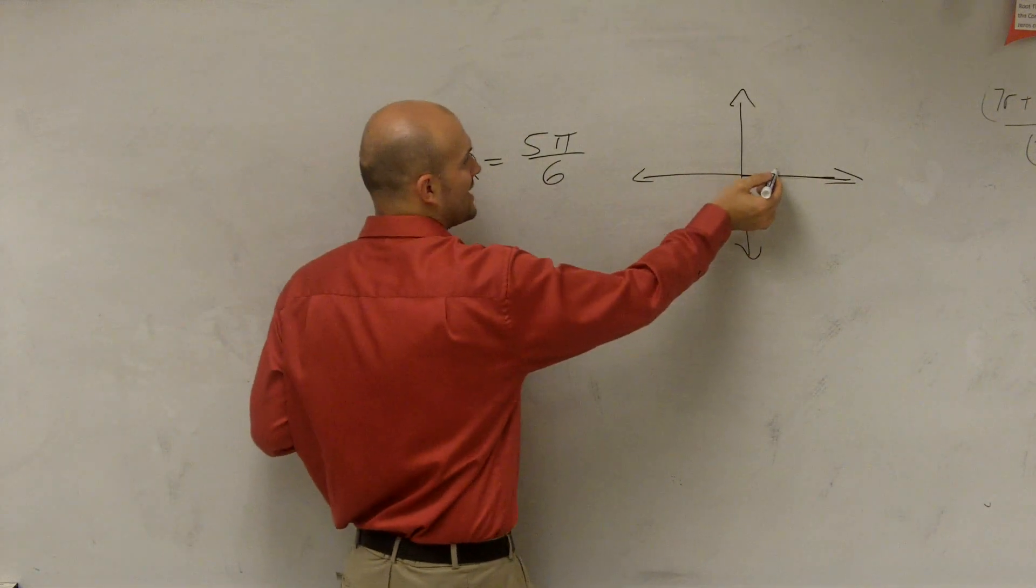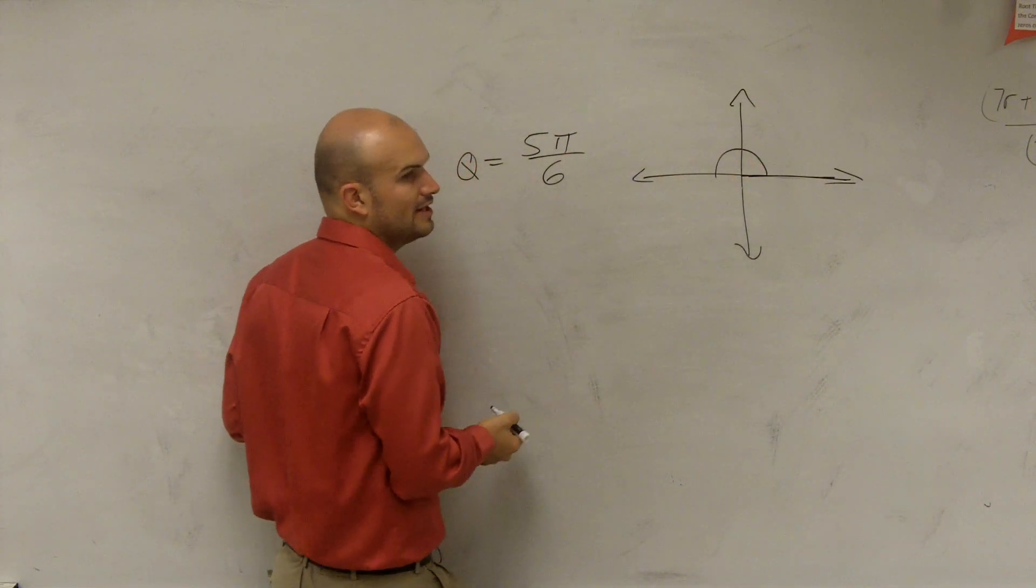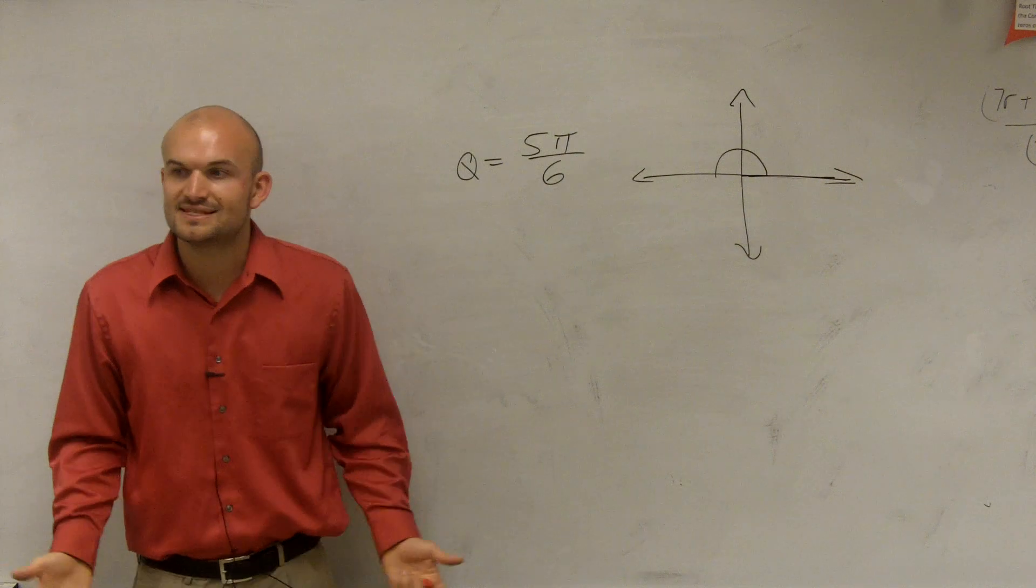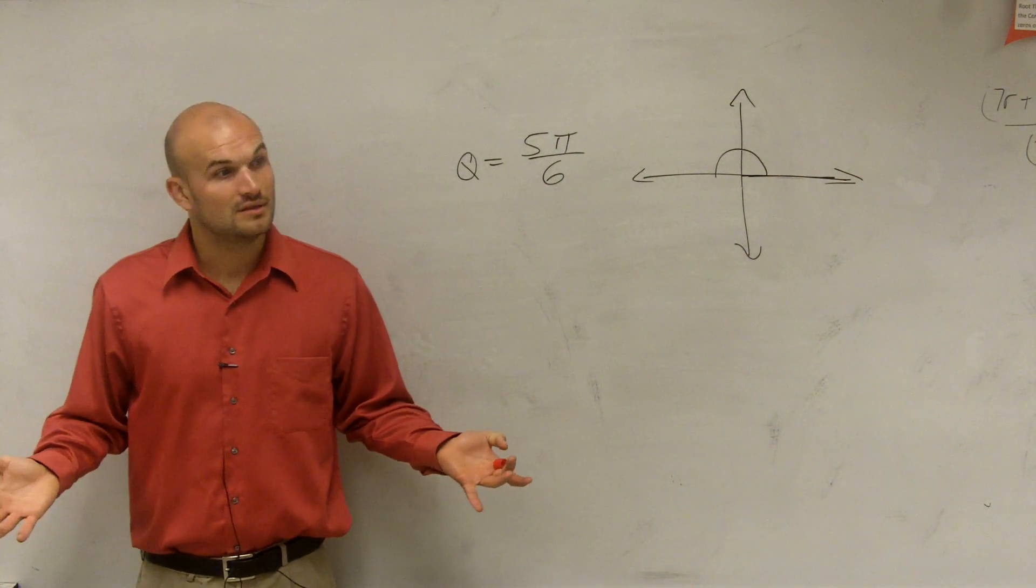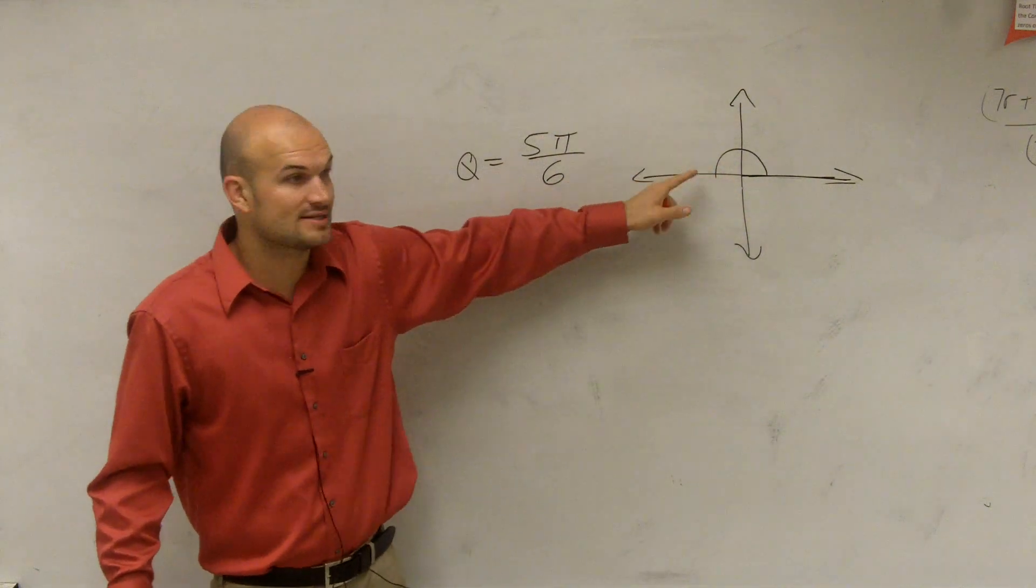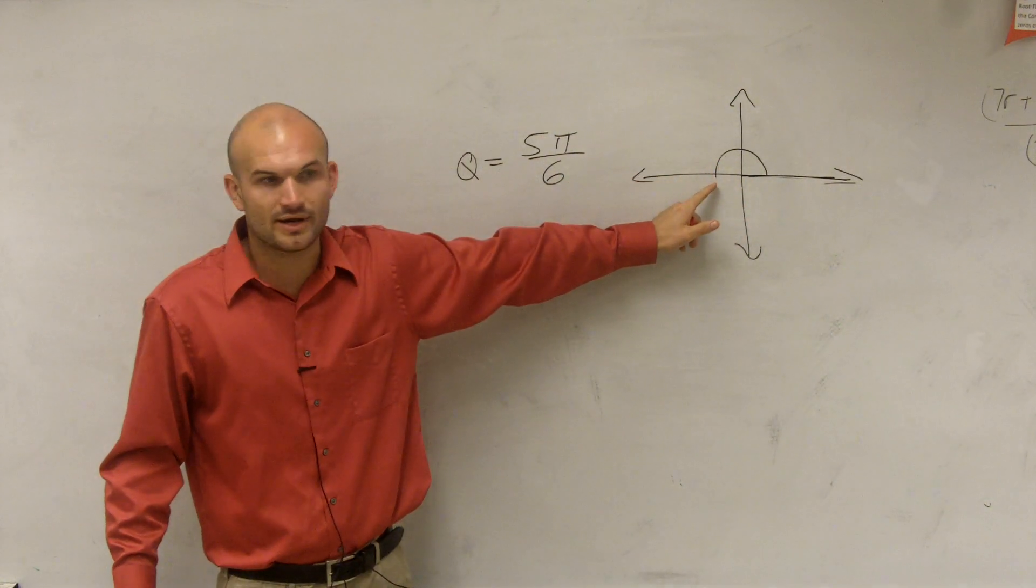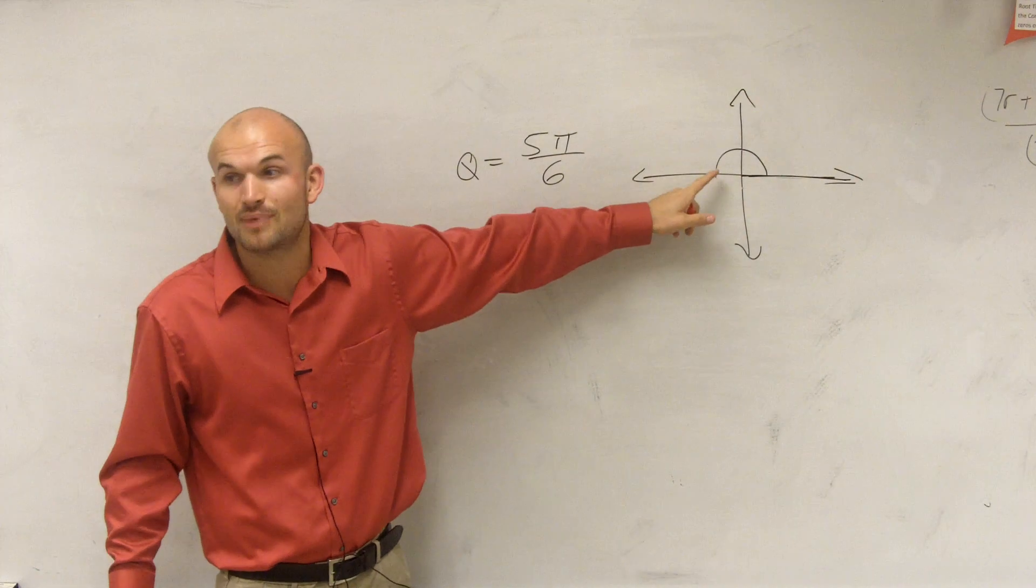Well remember, if I was going to graph an angle, π would be over here. But my fraction is 5/6. Is 5/6 greater than or less than 1? Less than 1. So it's not going to be all the way around a circle, right? It's going to be less than π.